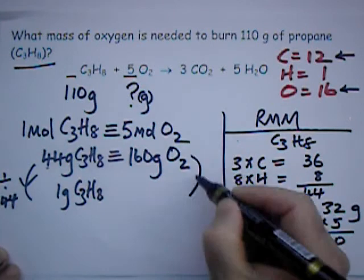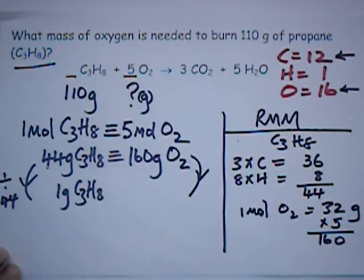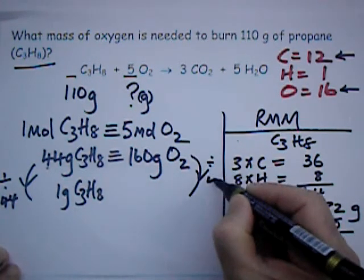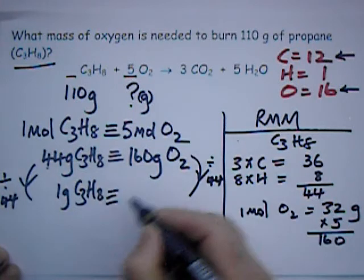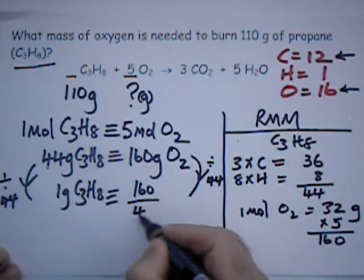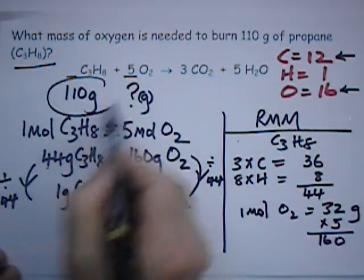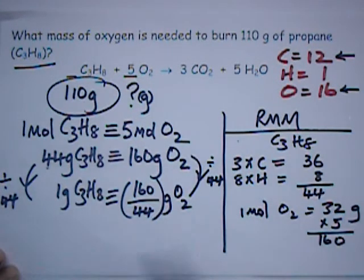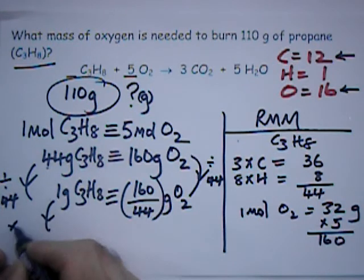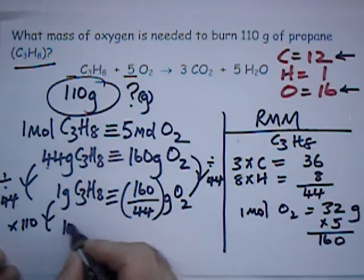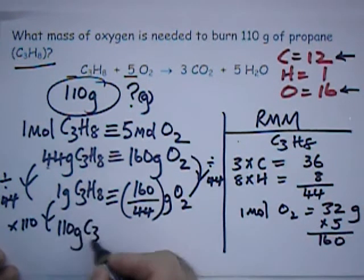In algebra, you must always do the same to both sides. So I divide this by 44. So that's 160 over 44 grams of O2. Now I can work out what any other number of grams would require. Multiply this by 110. That'll give me 110 grams of C3H8.